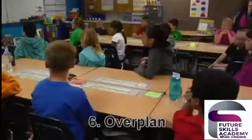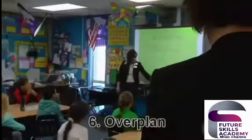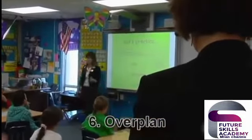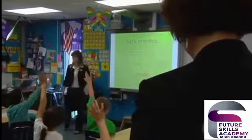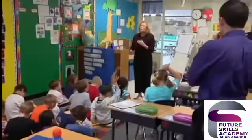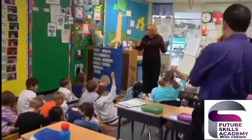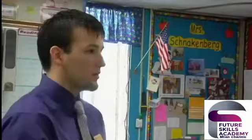Number six: over-plan. Make sure you have plenty of activities to cover classroom time. It is wise to have several go-to activities to do if and when your lessons finish early. It is sometimes the point of no return when students realize they are done with planned activities.